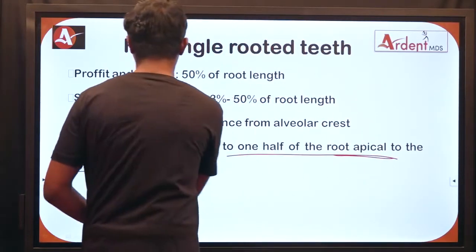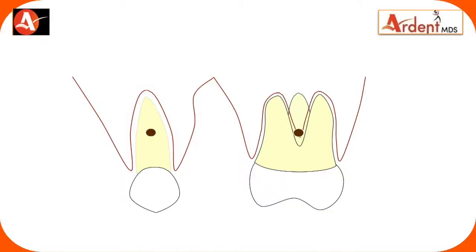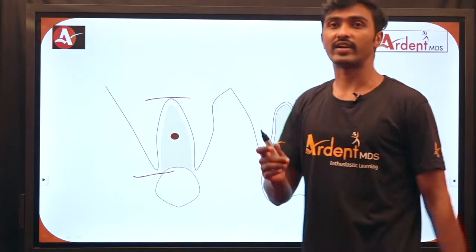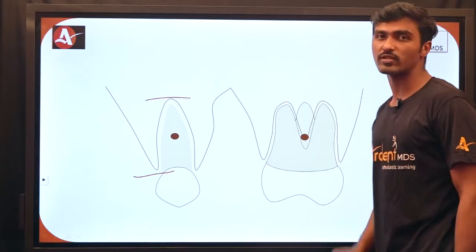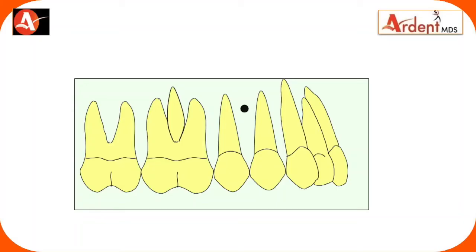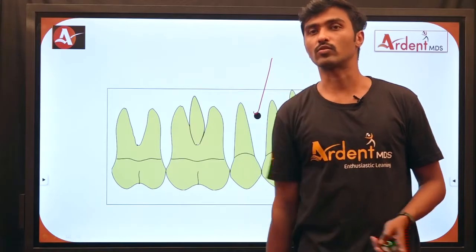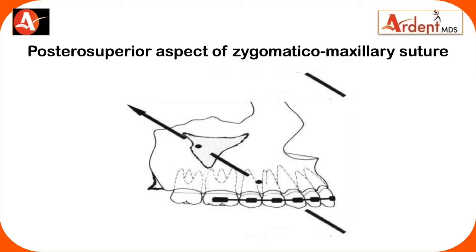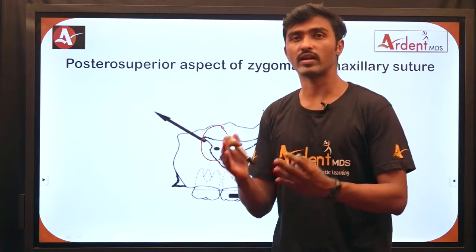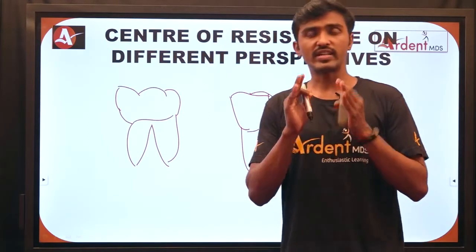Basically, the center of resistance is located at one-third to one-half of the root length apical to the alveolar crest. The location differs for single-rooted versus multi-rooted teeth. For single-rooted teeth it is at the midpoint or one-third to one-half from root apex to alveolar crest. For multi-rooted teeth like molars, it is somewhere close to the furcation area. For the entire maxillary arch from molar to molar, the center of resistance is between the roots of the premolar teeth. For the entire maxilla, it is at the posterior superior aspect of the zygomaticomaxillary arch, according to Stockley and Tuster.